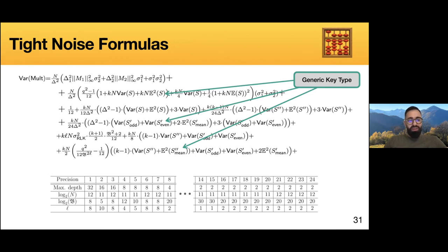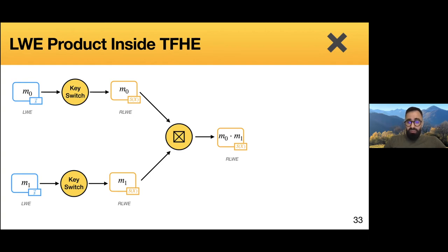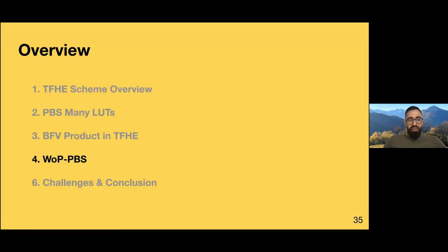Using this noise formula, we proved that we can compute leveled multiplications in TFHE. For instance, with a 4-bit message precision, we can have eight levels of multiplication. To use it in TFHE, we convert LWE ciphertexts into ring LWE ciphertexts via a key switch, converting input messages M0 and M1 into constant polynomials encrypted as ring LWE ciphertexts. Then we do the tensor product and key switch, ending up with a ring LWE ciphertext encrypting M0 times M1. To go back to LWE, we simply compute the sample extraction.